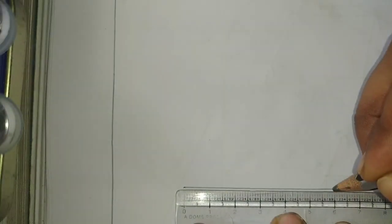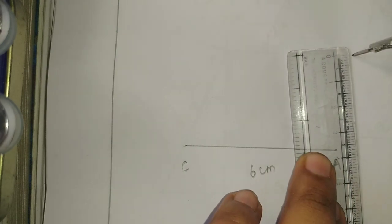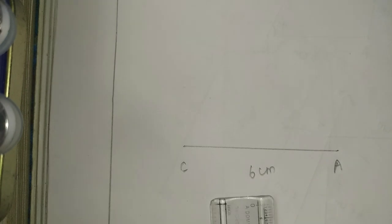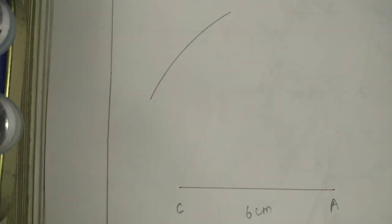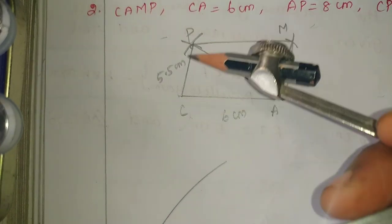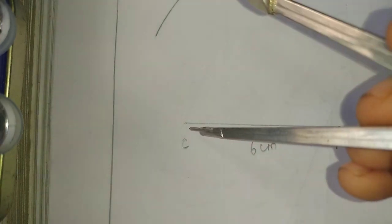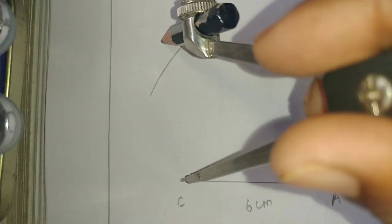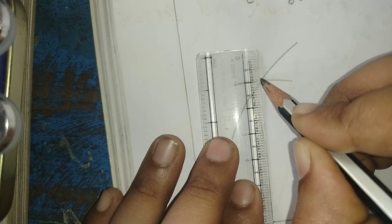First what do we do, 6 cm one line drop. So CA 6 cm. Next AP 8 cm, from A to P. A opposite side 8 cm arc. CP 5.5, cut the line, and join.